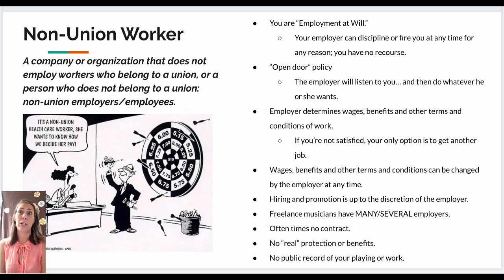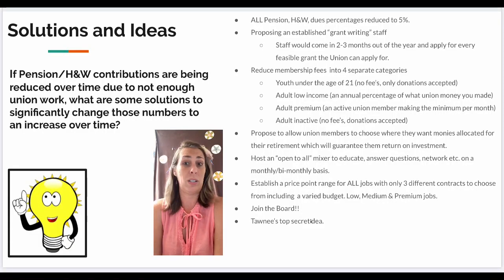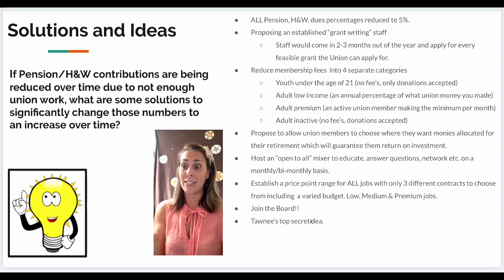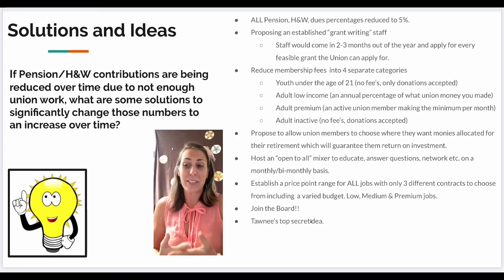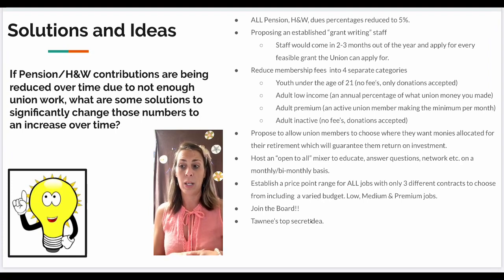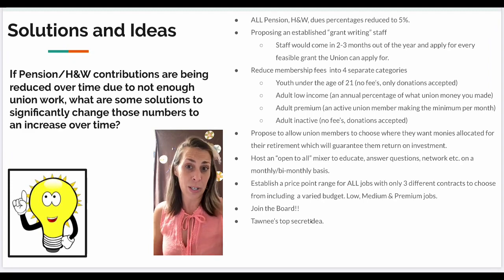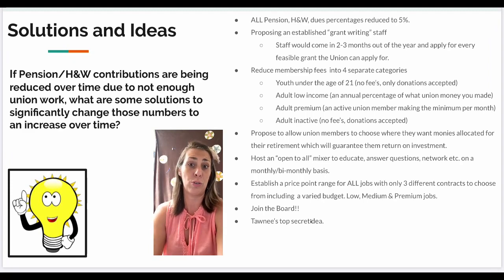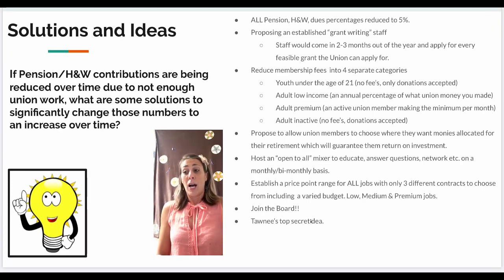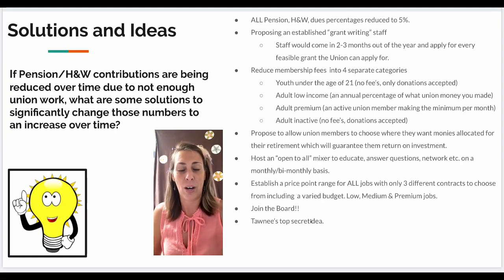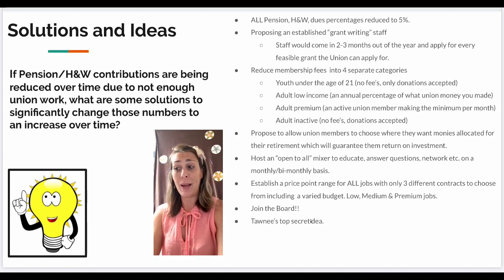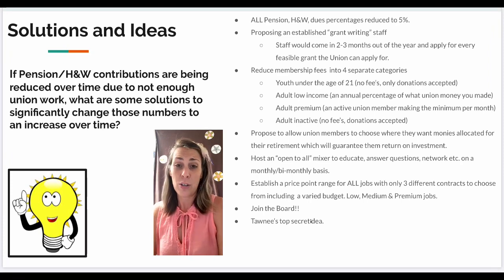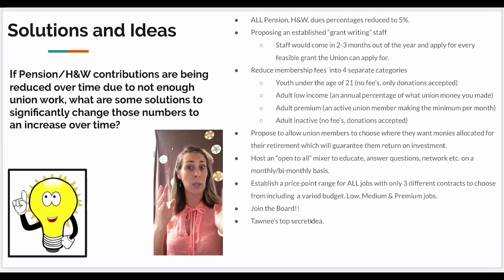Now that we've talked about all of these topics, I wanted to offer some solutions and possible ideas I've had personally in my business, and offer them to the world to see if you have other ideas that may help fix our industry. If pension, health and welfare contributions are being reduced over time due to not enough union work, what are some solutions to change those numbers and increase them over time? Perhaps if all pension, health and welfare due percentages could be reduced to a flat 5%, that seems like it would make a bit of sense — about cut in half — and it could have an even ground for all employers, at only a total of 10% of their entire budget.